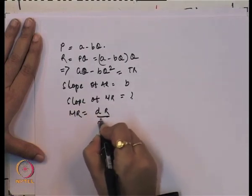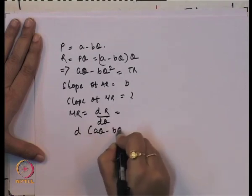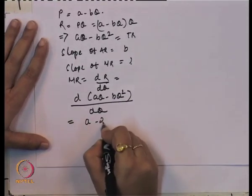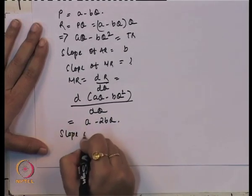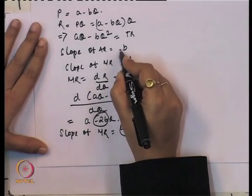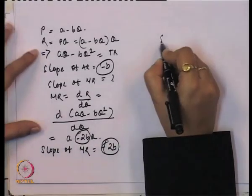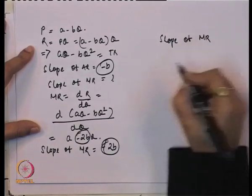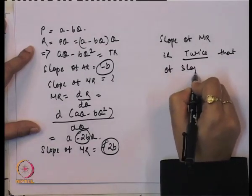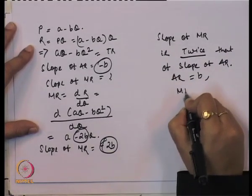Marginal revenue is dTR/dQ. Taking the derivative of AQ − BQ² with respect to Q gives A − 2BQ. So the slope of the marginal revenue curve is −2B, while the slope of the average revenue curve is −B. This confirms that the slope of MR is twice that of AR.